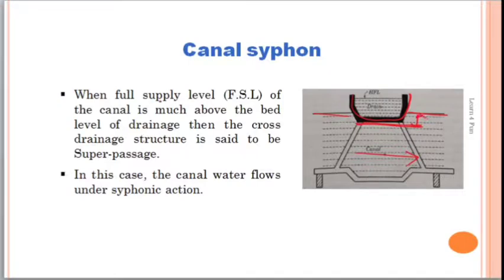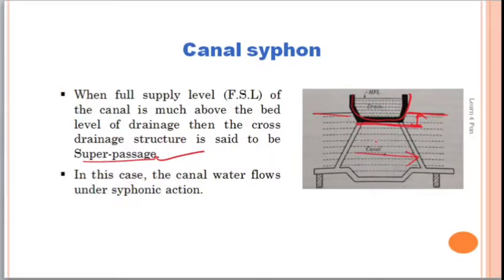The definition: when the full supply level of the canal is much above the bed level of the drainage, the cross drainage structure is said to be a canal siphon. In this case, when the canal runs with its full capacity — that is, up to the full supply level — the water will pass under the drain through siphonic action.